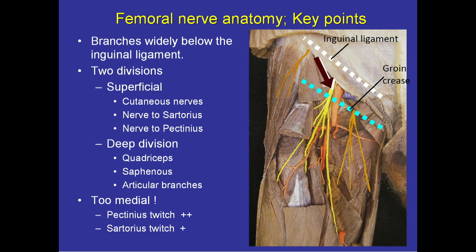The femoral vein lies medial to the artery. The femoral nerve branches vary widely lateral to medial after entering the leg. The branches also divide into a deeper division group and a superficial division group of nerves. Performing the nerve block too distal can result in only one division being blocked. The deep division is usually the surgically preferred one to block. Stimulation of the deep division results in a quadriceps muscle twitch, while stimulation of the superficial division results in a sartorius muscle twitch.